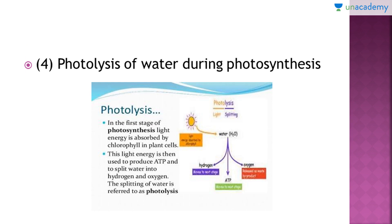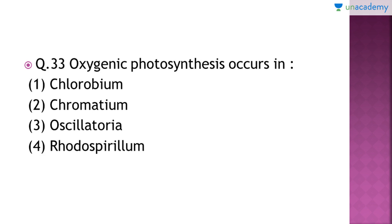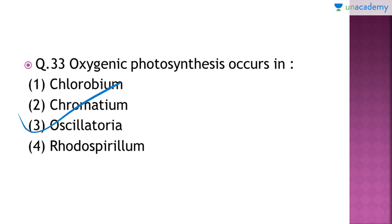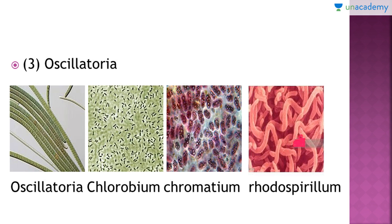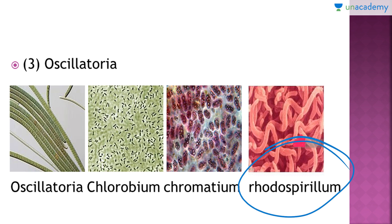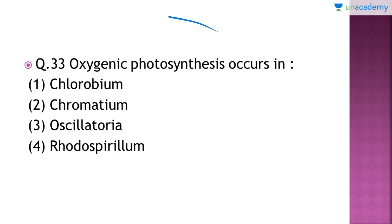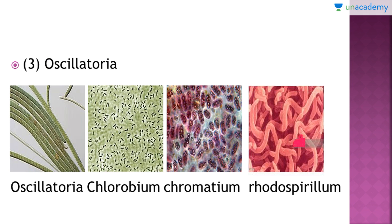Question number 33: oxygenic photosynthesis occurs in which of the following bacteria? The right answer is oscillatoria. Here you can see pictures of all four types of bacteria: oscillatoria, chlorobium, chromobium, and rhodospirillum. Out of the four, oxygenic photosynthesis occurs in oscillatoria. Oxygenic photosynthesis means a type of photosynthesis in which oxygen is evolved — for example, the photosynthesis which occurs in green plants. In some bacteria, non-oxygenic photosynthesis occurs, in which instead of oxygen some other gases are evolved.